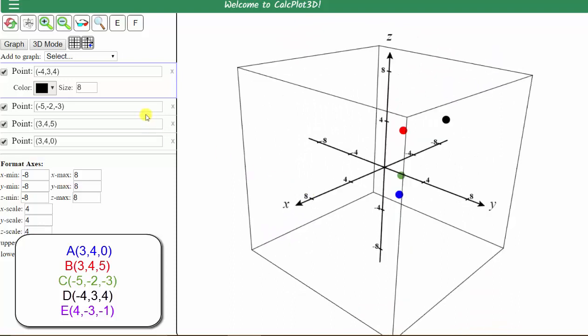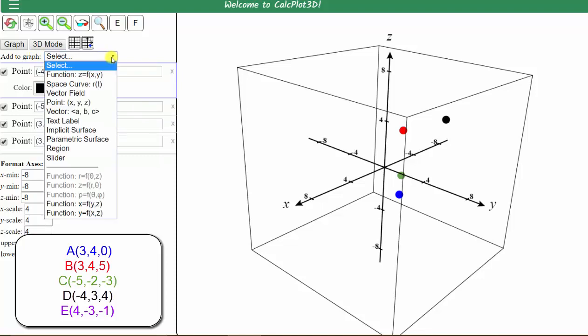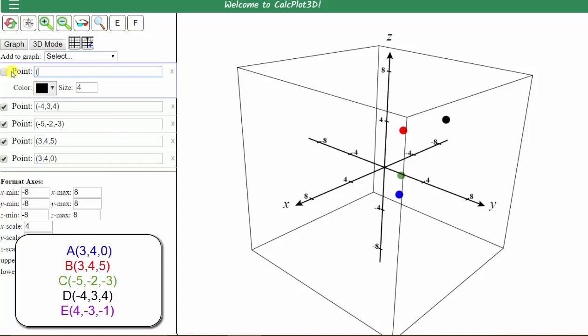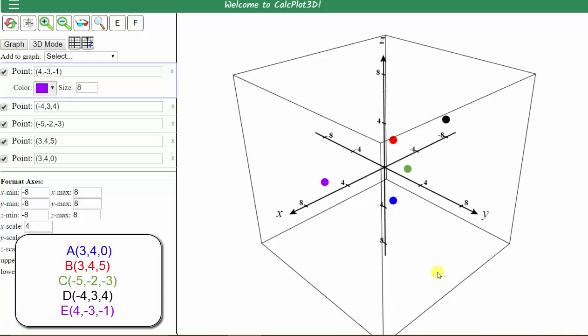And now let's plot the last order triple, which is (4, -3, -1). Let's graph this point in purple. So click the arrow, select point, enter the order triple in parentheses. Change the color to purple, change the size to eight, and click graph. Now we have all five points plotted in space. Let's rotate the view one last time.